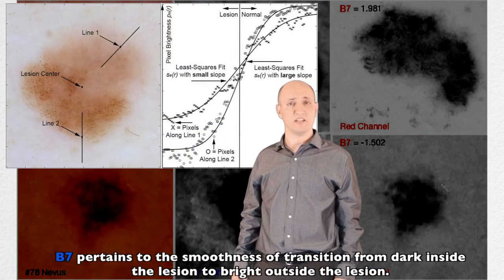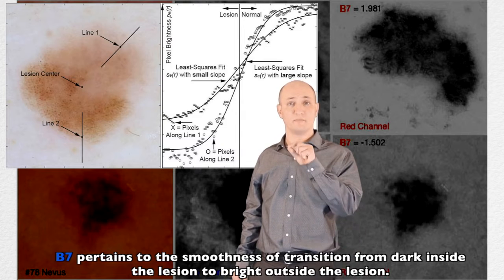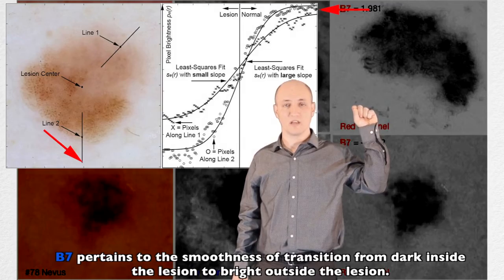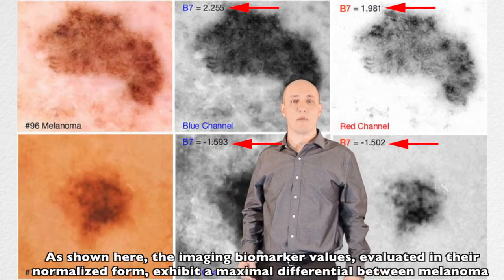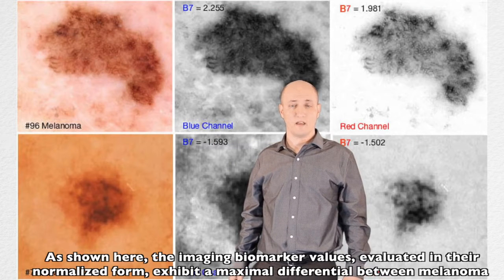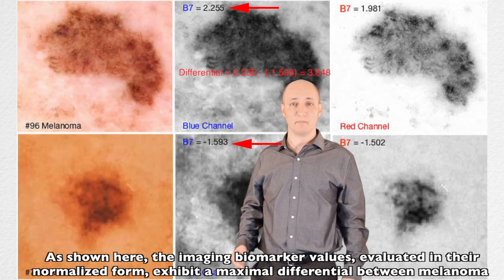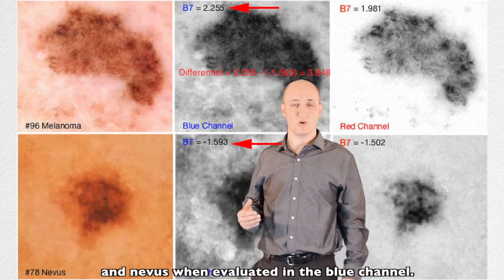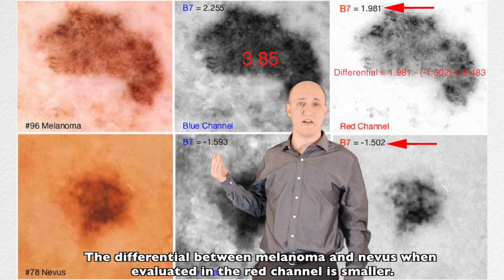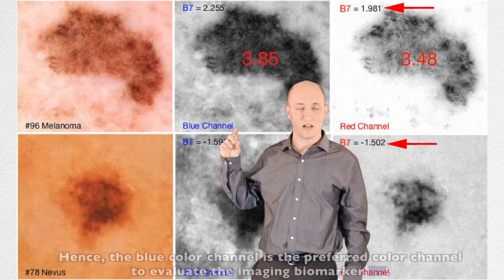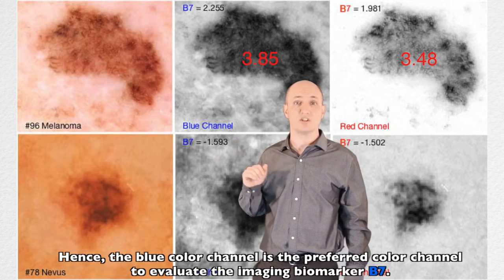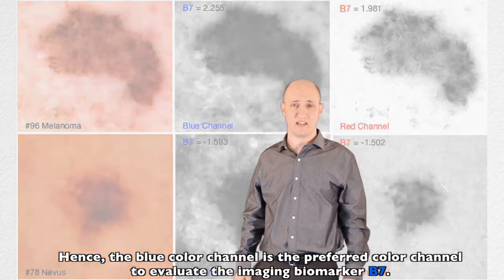B7 pertains to the smoothness of transition from dark inside the lesion to bright outside the lesion. As shown here, the imaging biomarker values, evaluated in their normalized form, exhibit a maximal differential between melanoma and nevus when evaluated in the blue channel. The differential between melanoma and nevus when evaluated in the red channel is smaller. Hence, the blue color channel is the preferred color channel to evaluate imaging biomarker B7.